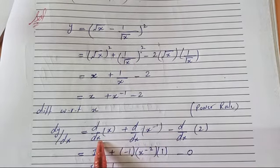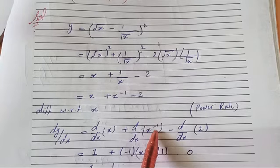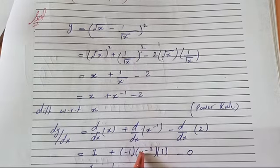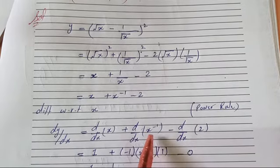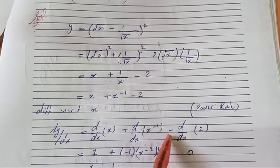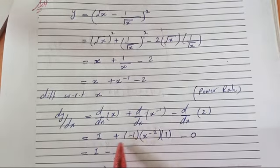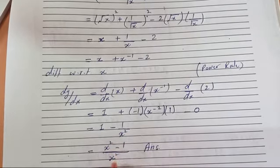The derivative of x with respect to itself is 1. For x^(-1), apply the power rule: bring the power down as -1, then x^(-1-1) = x^(-2), and the derivative of x with respect to itself is 1. The derivative of the constant 2 is 0. So we get: 1 minus x^(-2). When x^(-2) is written in the denominator it becomes 1/x². Taking LCM gives the final answer: (x² - 1)/x.